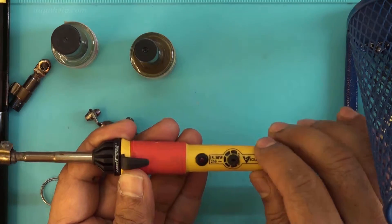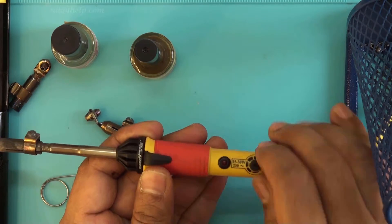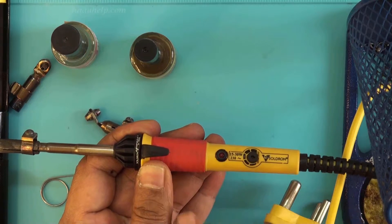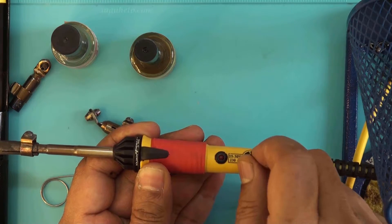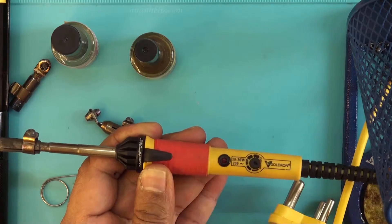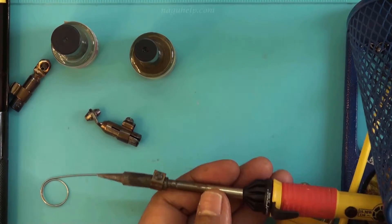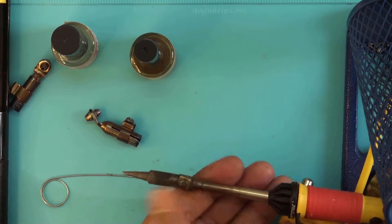This is vary temp variable wattage soldering iron. The wattage of this iron can be varied from 15 watts to 30 watts by rotating this dial. By changing the wattage, we can adjust the temperature of soldering bit as per the need.